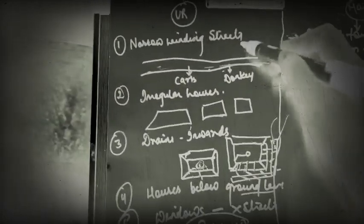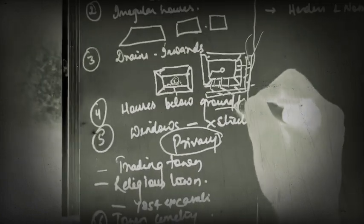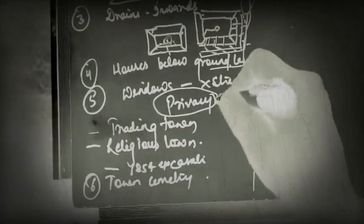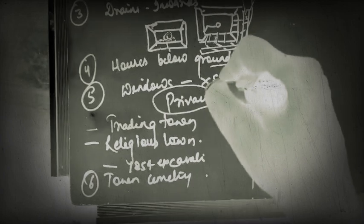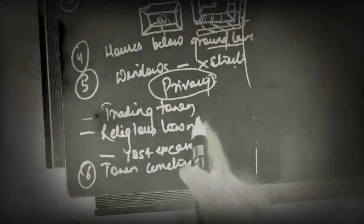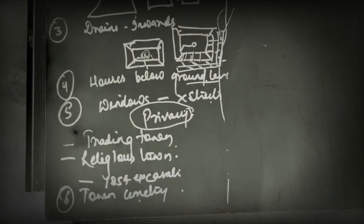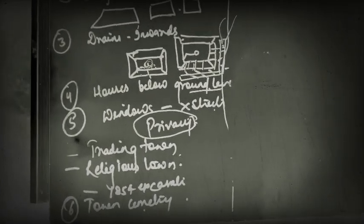So these are the prime features of the city of Ur. There are narrow winding streets. There are irregular houses. There are drains. There are underground houses. There is a window which doesn't open on the street. So the concern of privacy is visible. It's a trading town. It's a religious town. There is a town cemetery. And initially Ur shows us that Mesopotamian towns were not well planned. And as soon as the archeologists begin to think like that, they excavated another town. The town name is Mari.